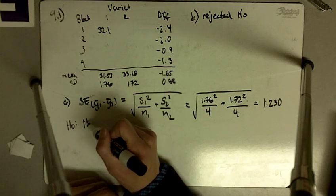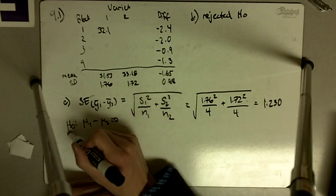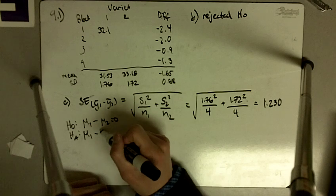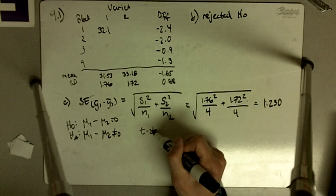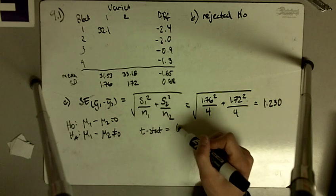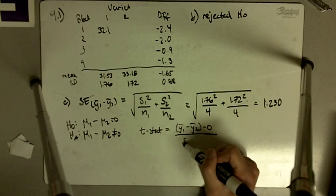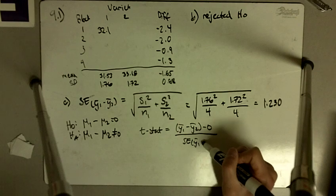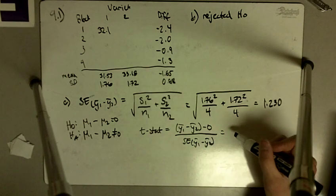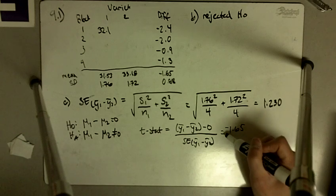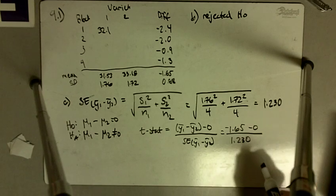Our null hypothesis is that mu1 minus mu2 is equal to 0, and the alternative is that mu1 minus mu2 does not equal 0. Our t-statistic is going to be Y1-bar minus Y2-bar minus 0, divided by the standard error of Y1-bar minus Y2-bar. So that's negative 1.65 minus 0 divided by 1.230.